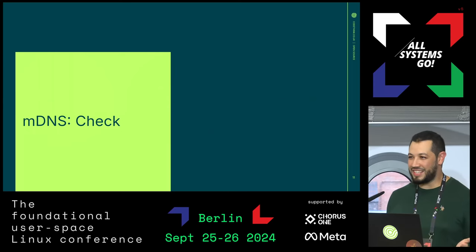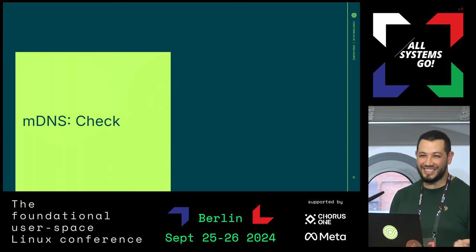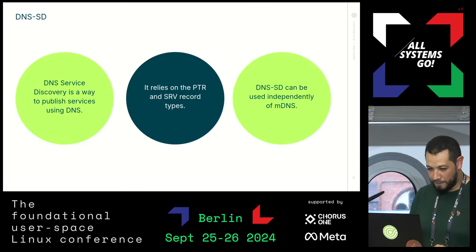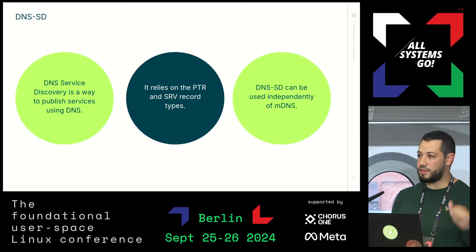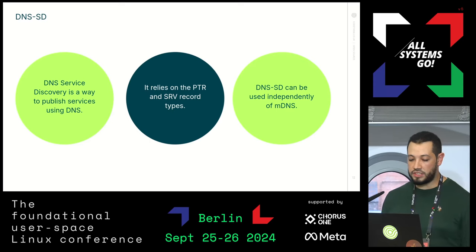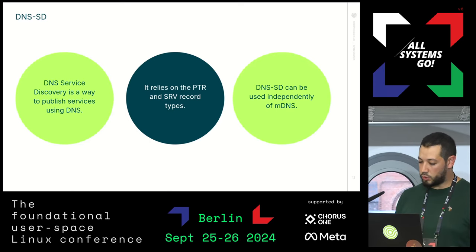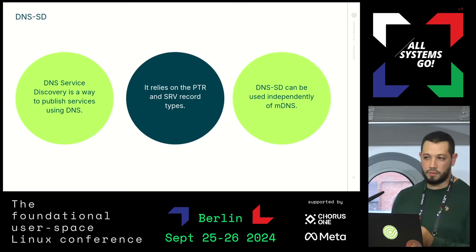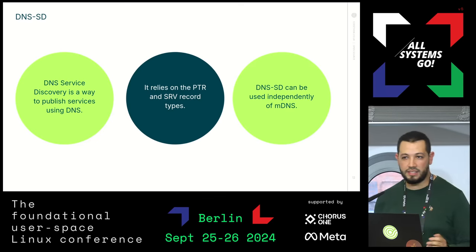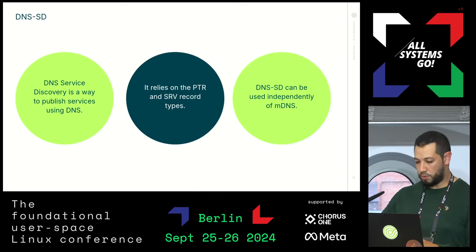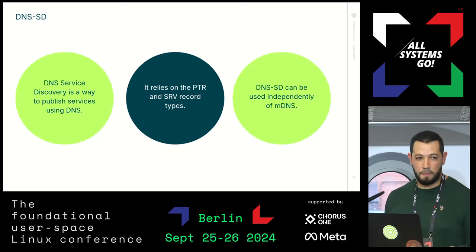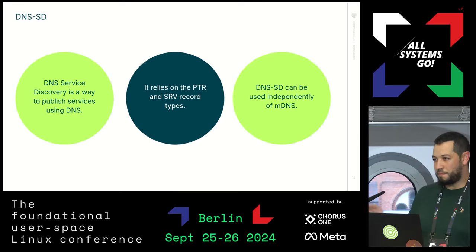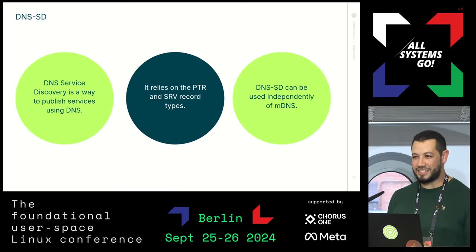MDNS is good — even better in a way — than DNS-SD. DNS service discovery is a way to publish services using DNS. It relies on PTR and SRV records, and it doesn't depend on MDNS — there are provisions in the specification for using it with MDNS, but it can work with regular DNS. You can publish these records on your domain and do service discovery. I wanted to find a public domain that implements this, but I couldn't — people generally implement it inside their network.